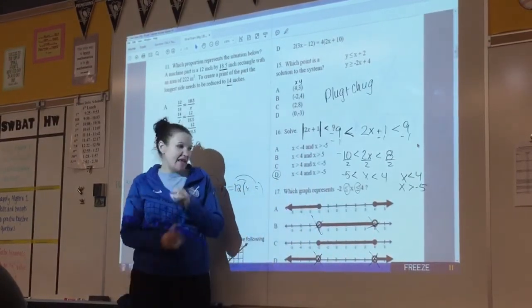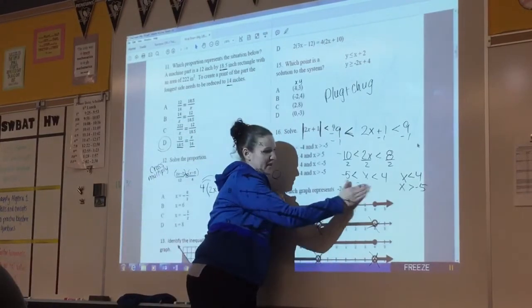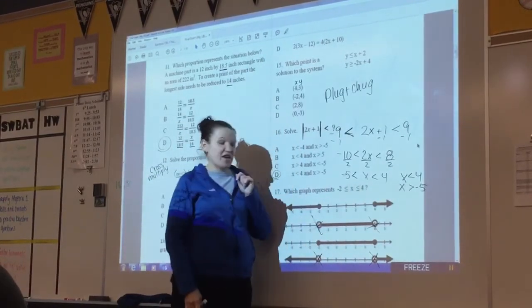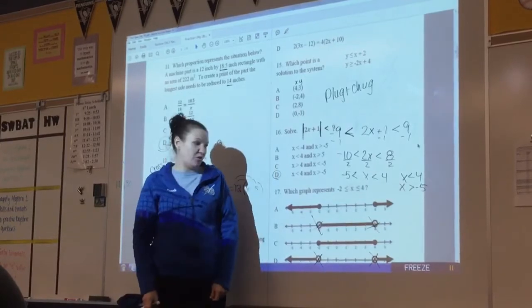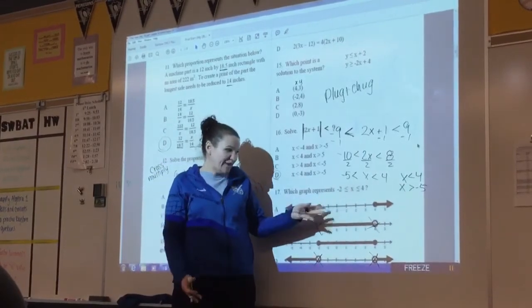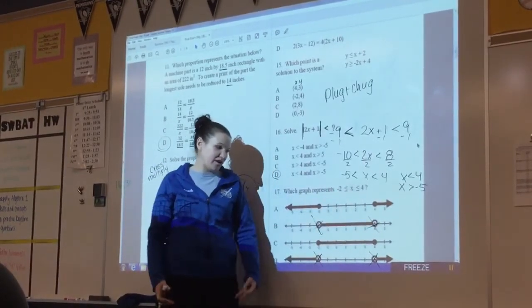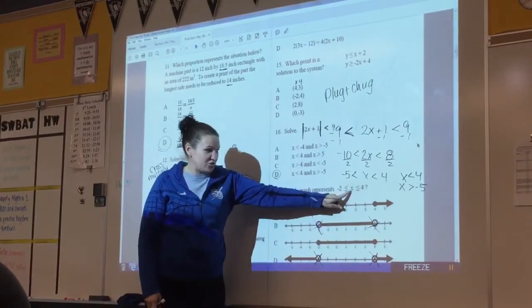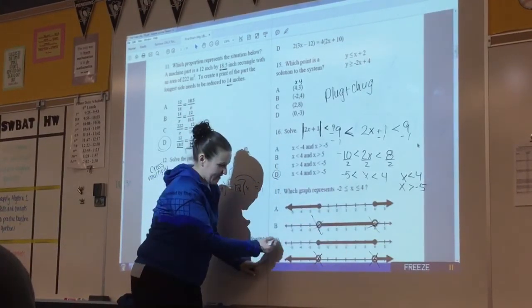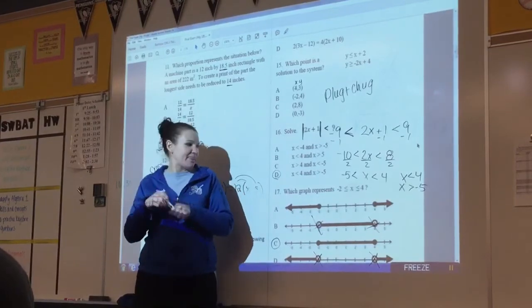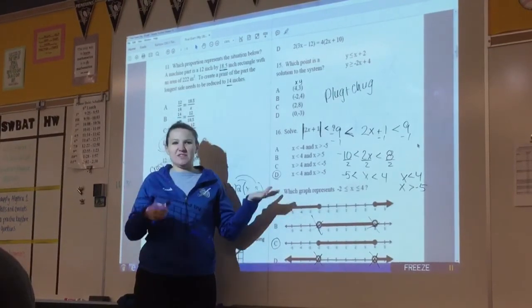Even better, if the variable's in the middle, my x is in the middle of those two, then your shading needs to be in the middle. Your solution is between negative two and four, including those numbers. So since your solution's in the middle, that's where your shading should be, your answer has to be C. And that wraps up this one section.